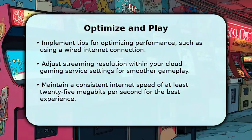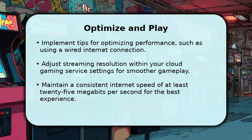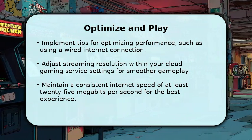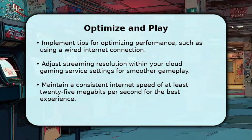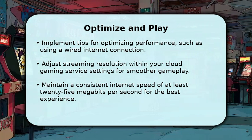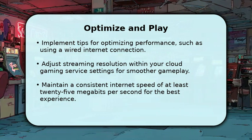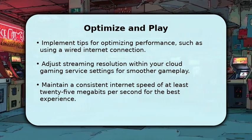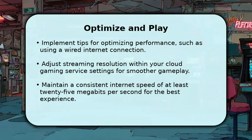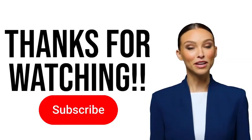For the best experience, use a wired Ethernet connection instead of Wi-Fi to minimize latency. Consider lowering the streaming resolution within your cloud gaming service settings if you encounter any lag. A consistent internet speed of at least 25 megabits per second is highly recommended. With these optimizations, you can enjoy playing Roblox on your Raspberry Pi, transforming it into a capable gaming machine. Consider subscribing if we helped you.